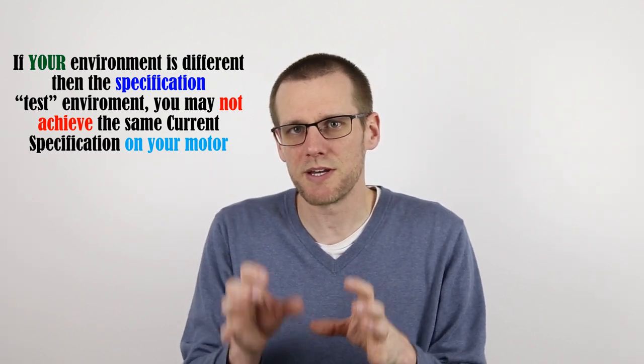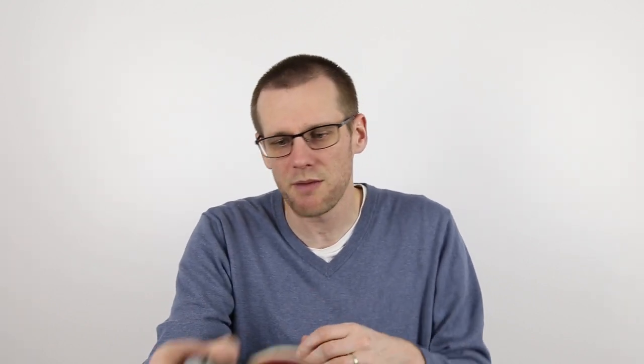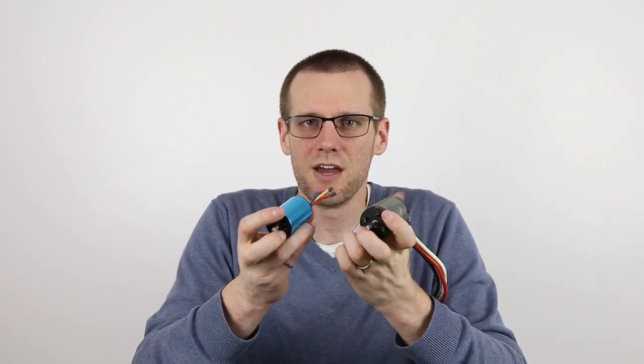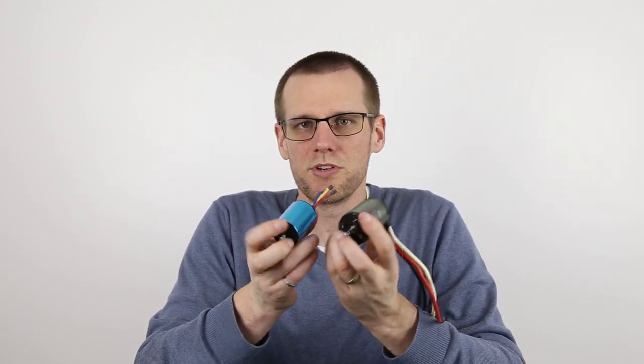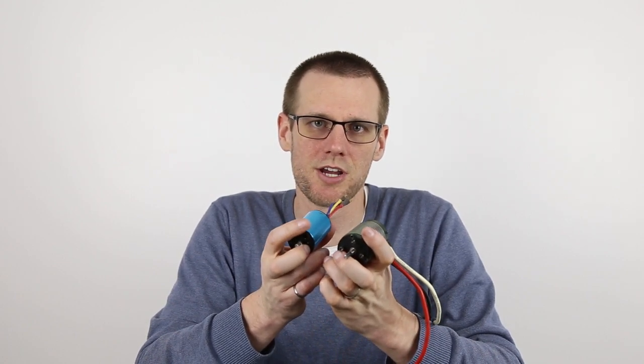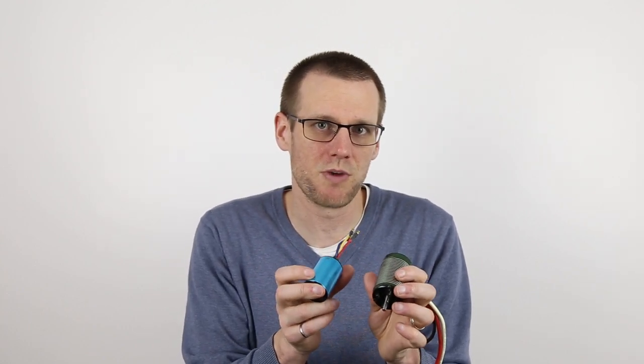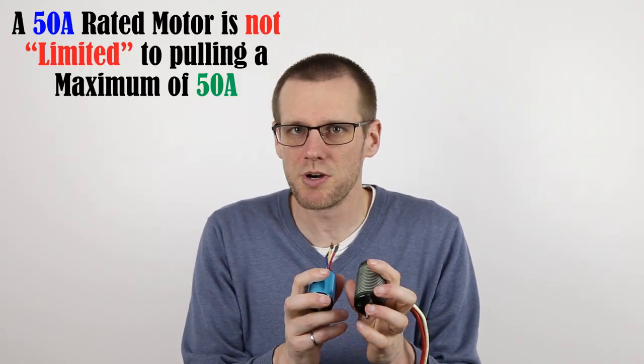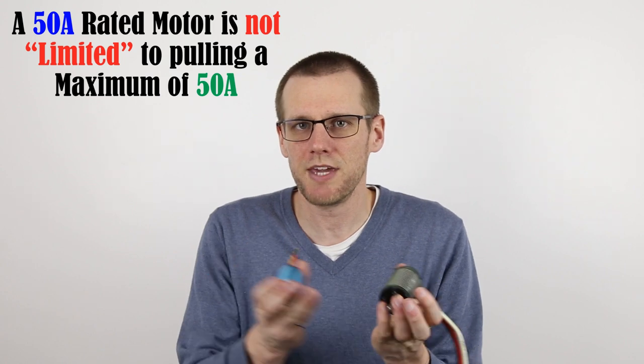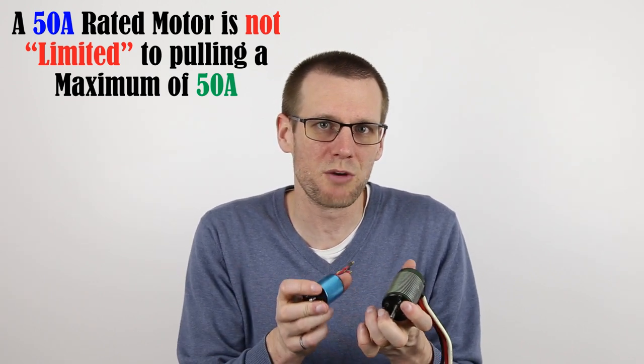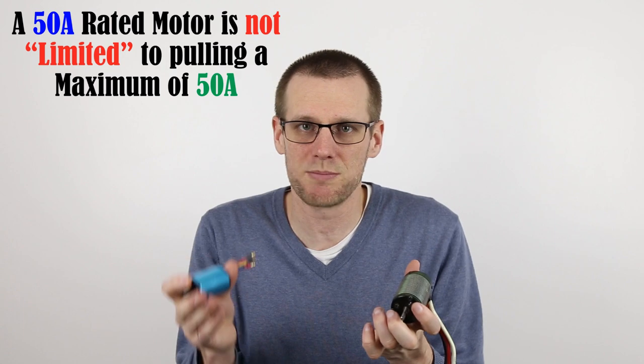Here's exactly what the specification for current is not. So if you have a motor, for example, we have a couple motors here on the table. If you have a motor that is rated for, let's say, 50 amps, let's assume both of these motors are rated for about 50 amps of continuous discharge. That doesn't mean you cannot pull 51 amps from this motor or even 300 amps from this motor. Just because the motor is rated for 50 amps of continuous power doesn't mean you can pull 300 amps from it.